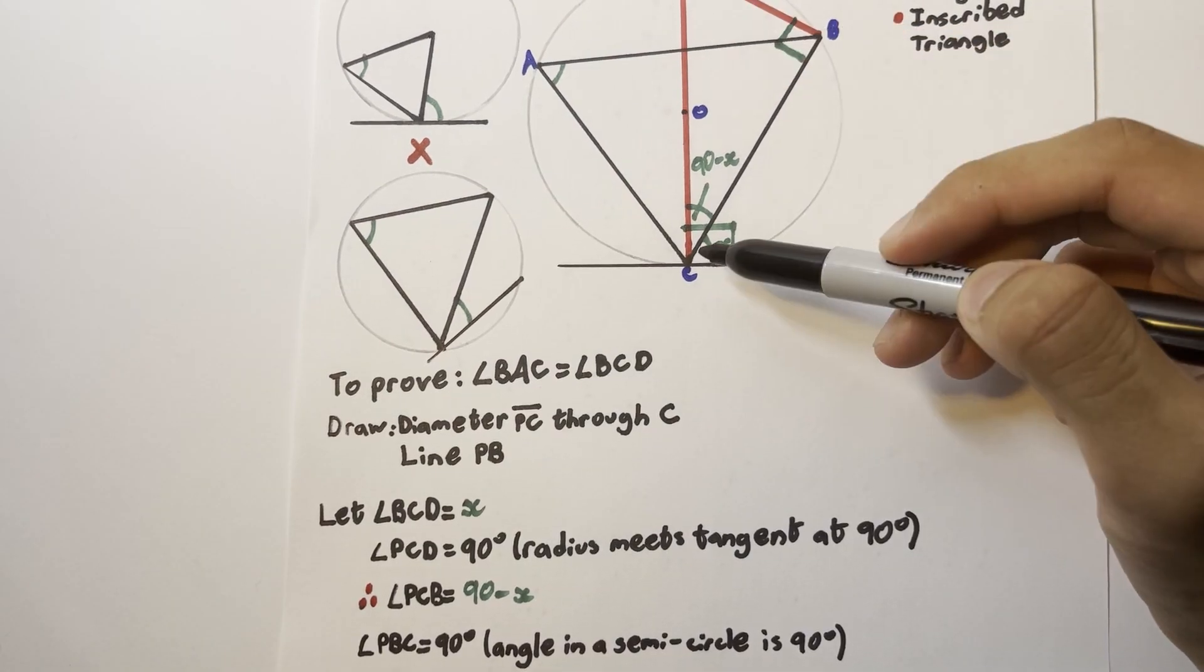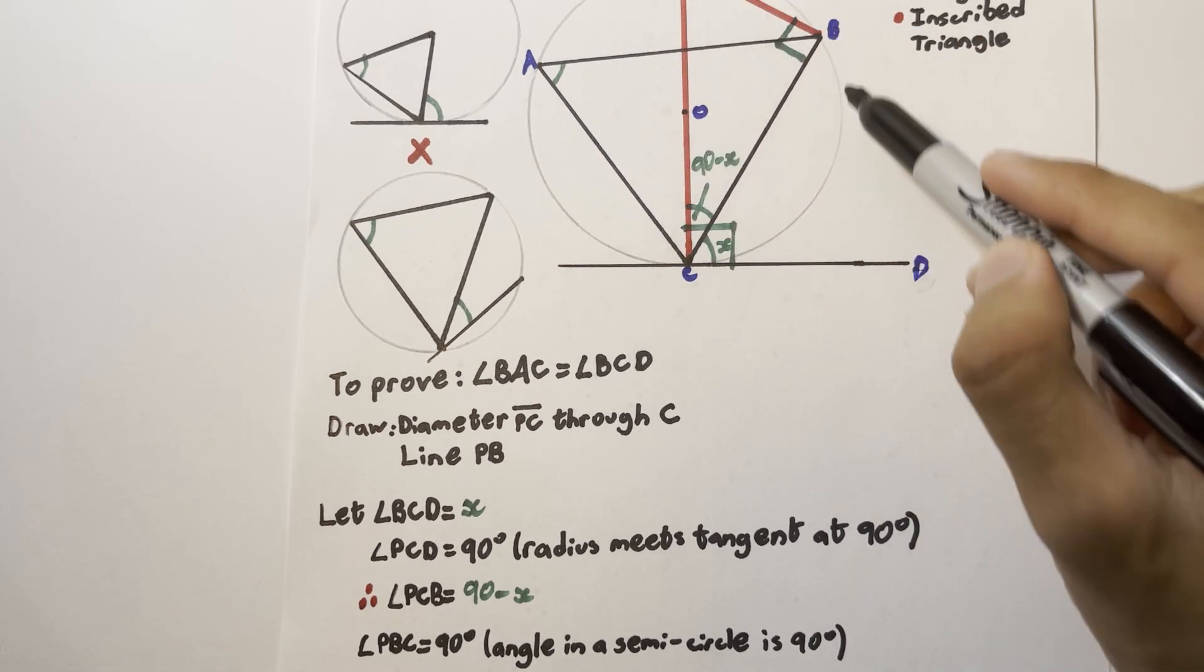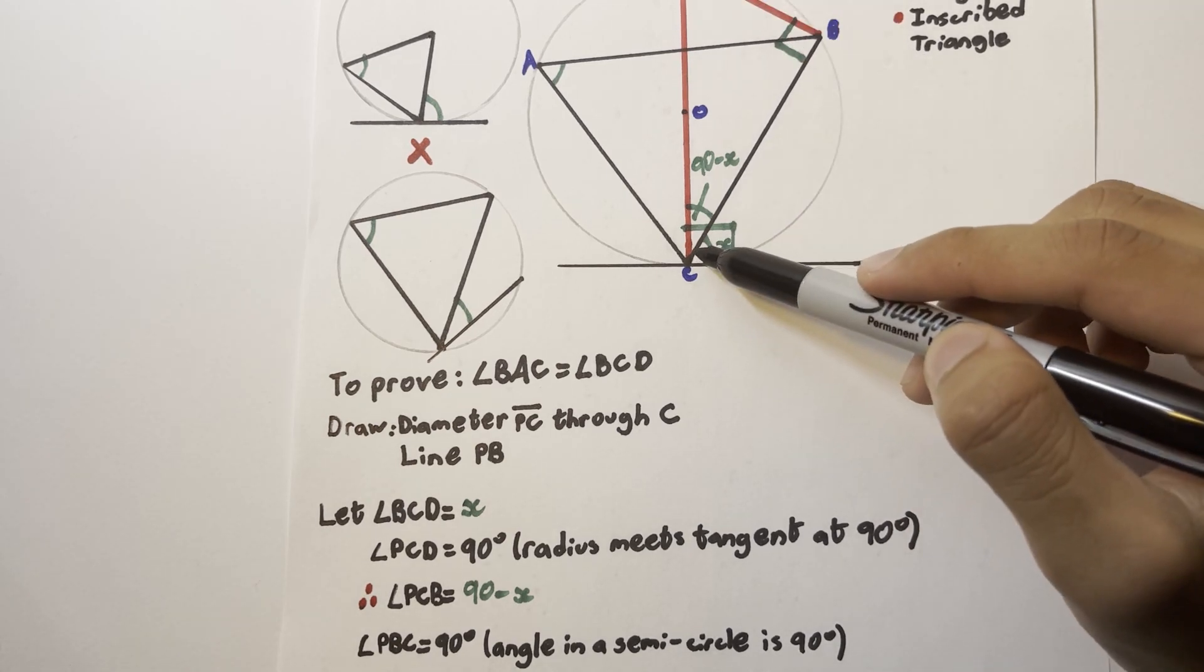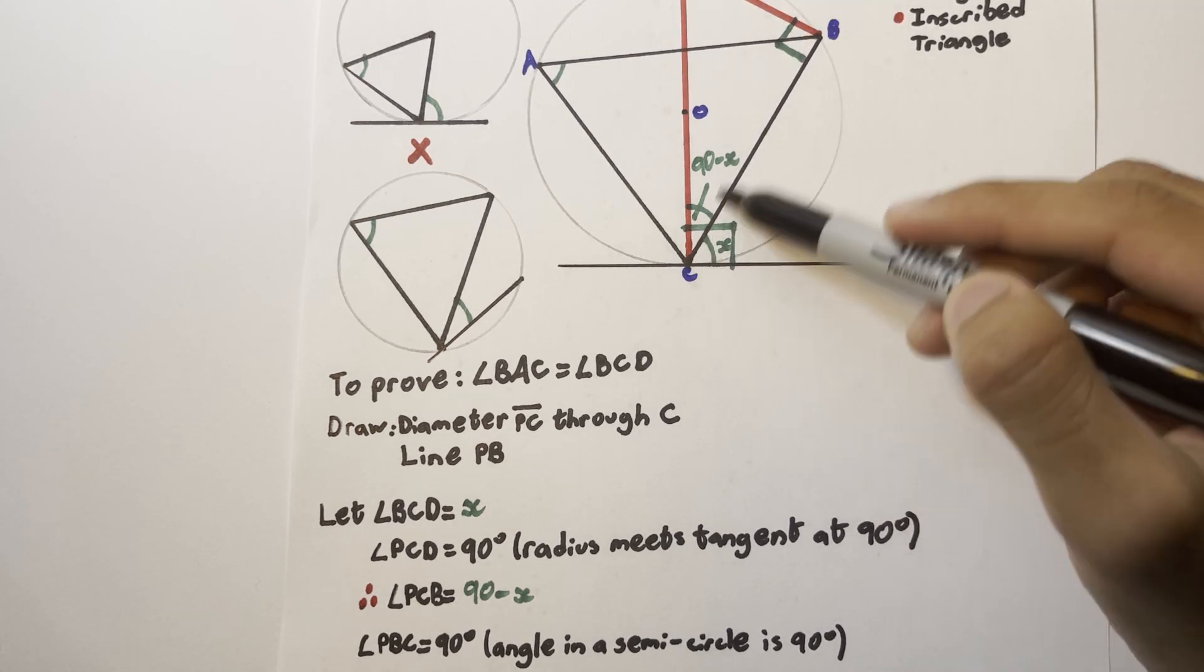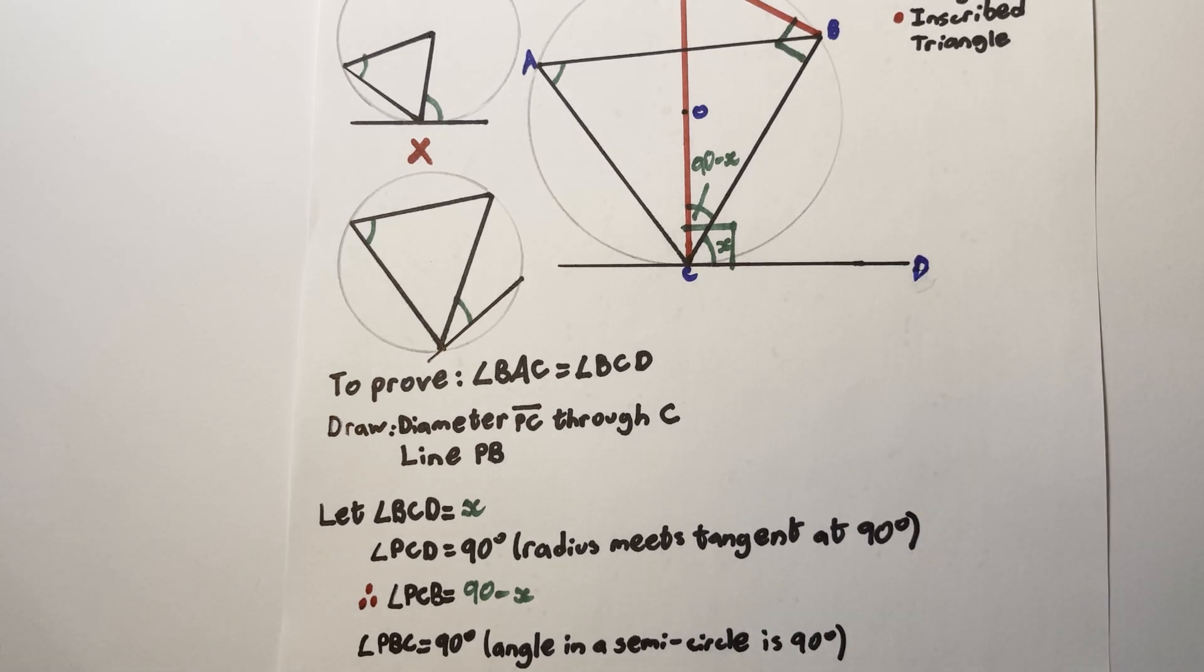Because the construction line PC that we drew is a diameter, notice that we've split the circle into two halves. We've created a semicircle on this side. This means that angle PBC, which is created from lines joined from the edges of the semicircle, must be a right angle, because the angle in a semicircle is 90 degrees.